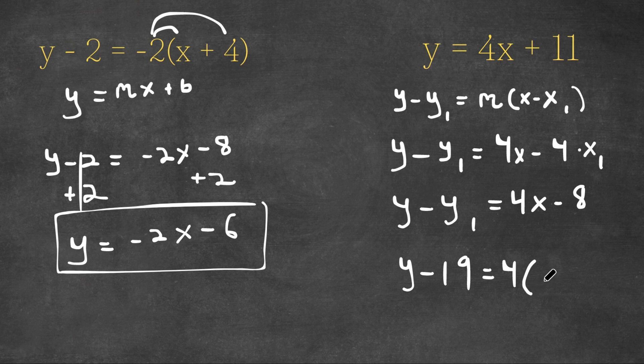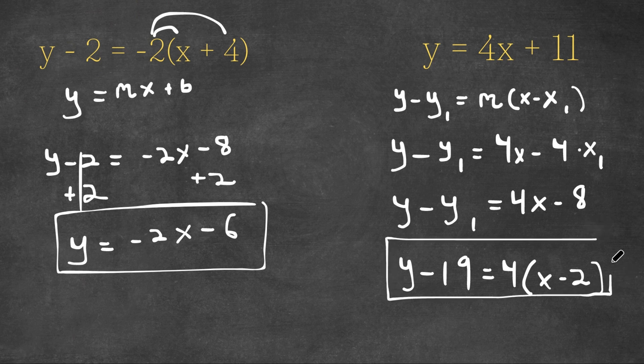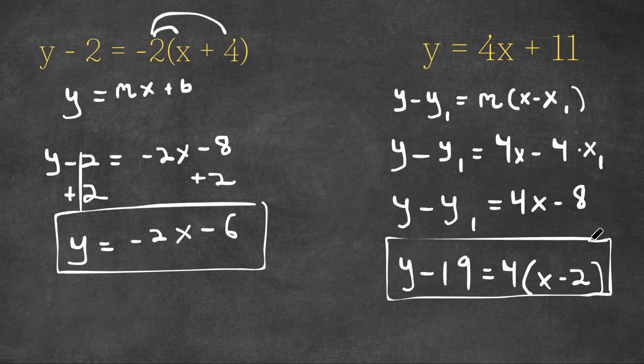4 times x minus 2, because 4 times negative 2 is negative 8. So this is one possible equation, however, there is an infinite possibility of equations as long as they end up being in the form y is equal to 4x plus 11.